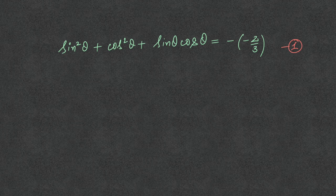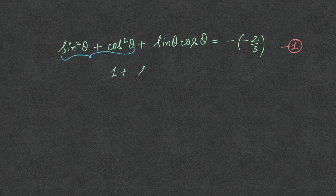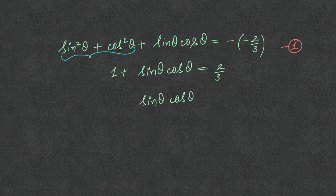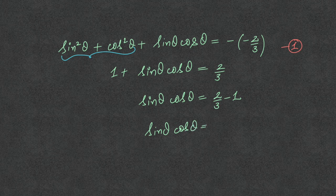Using equation 1 and the identity sin²θ + cos²θ = 1, this simplifies to 1 + sinθcosθ = 2/3. From here, sinθcosθ = 2/3 - 1, which gives sinθcosθ = -1/3.